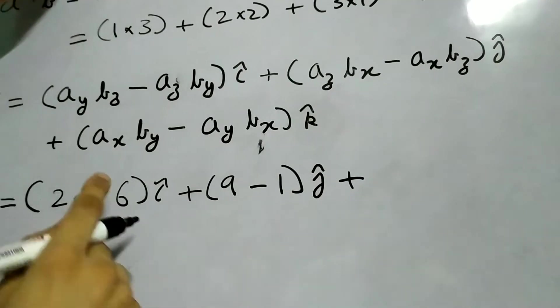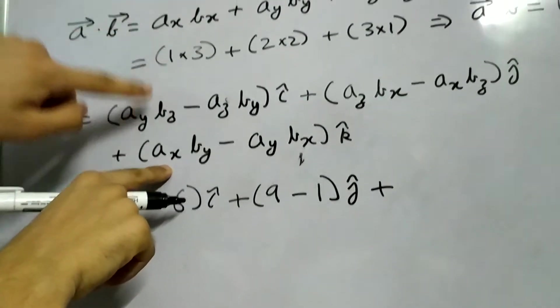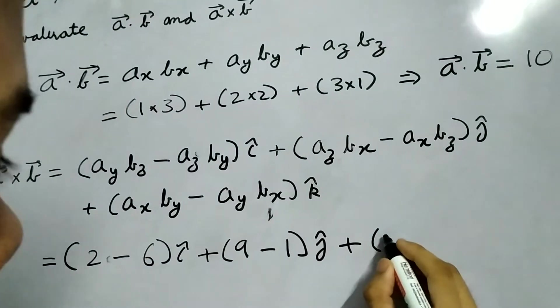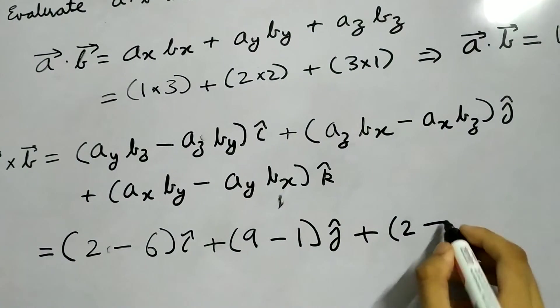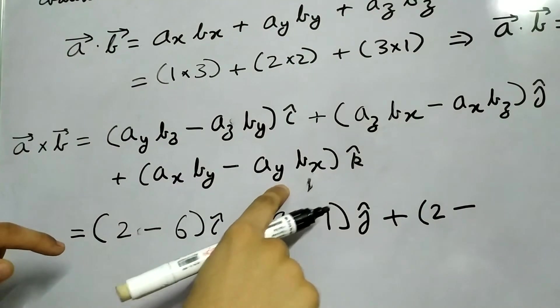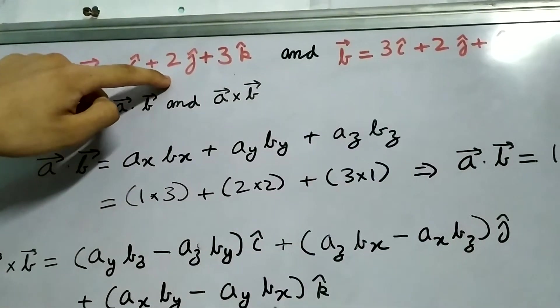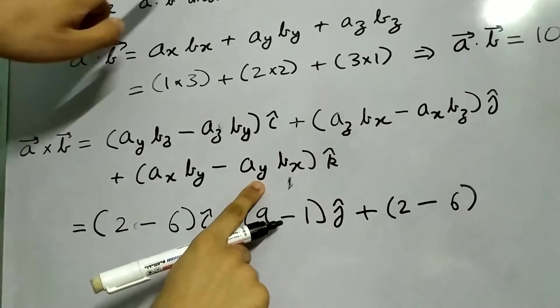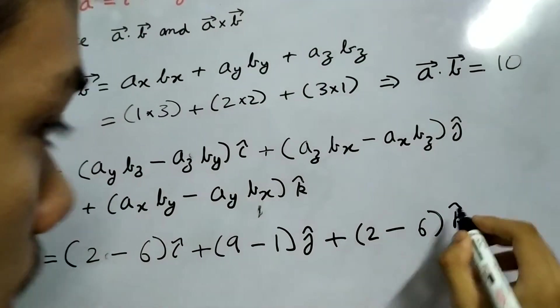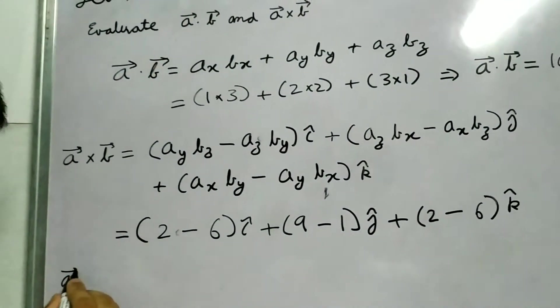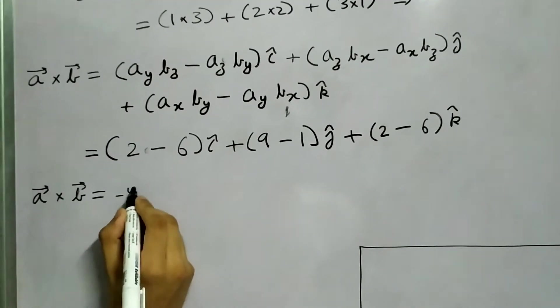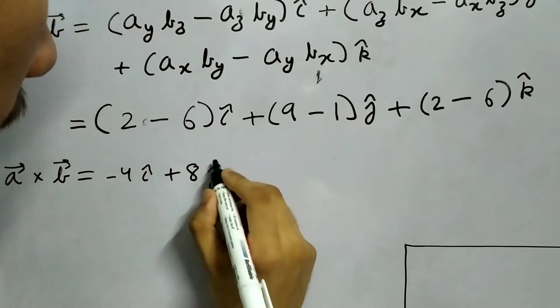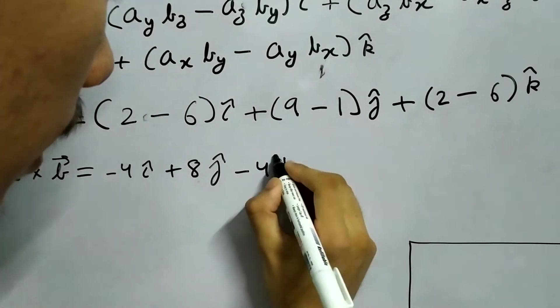Plus K cap component A_x, this is 1 into B_y which is 2, minus A_y B_x. A_y is 2 and B_x is 3, so this will be 6. 2 minus 6.